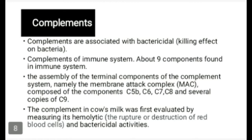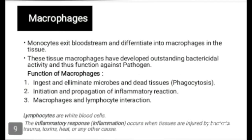Macrophages: monocytes exit the bloodstream and differentiate into macrophages in the tissue. These tissue macrophages have developed outstanding bactericidal activity and function against pathogens. Functions of macrophages include ingesting and eliminating microbes and dead tissues by phagocytosis, and initiating and propagating the inflammatory reaction. Inflammatory reaction occurs when tissues are injured by bacteria, trauma, toxins, heat, or any other cause.